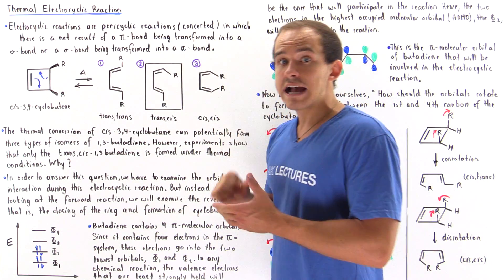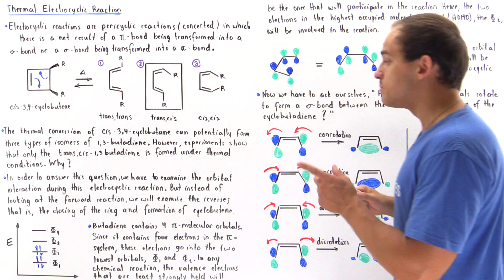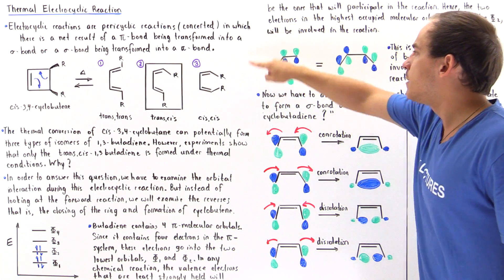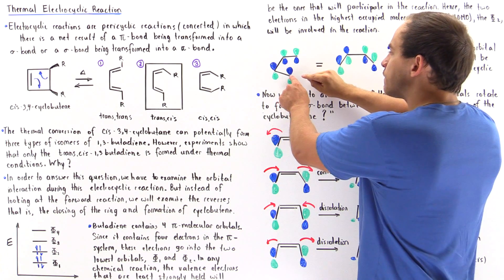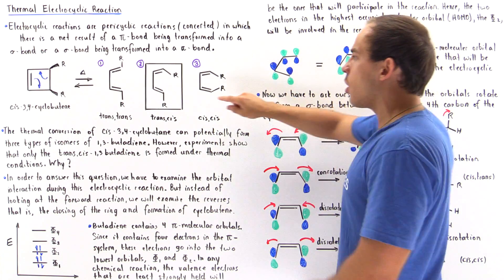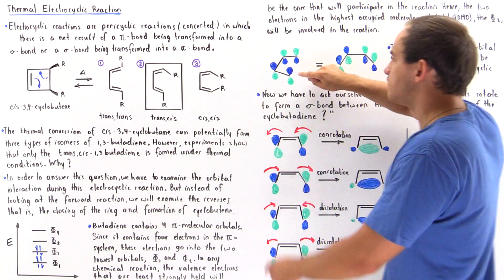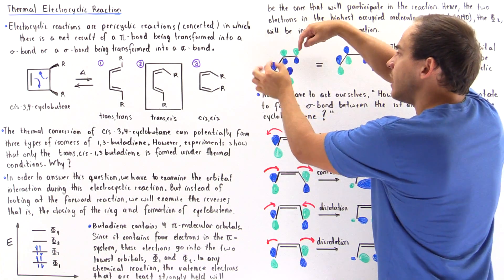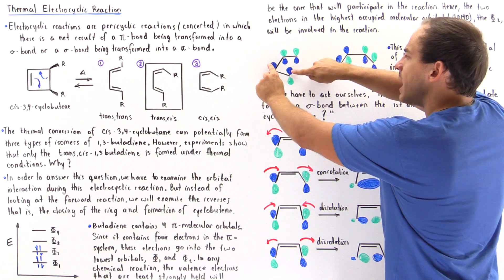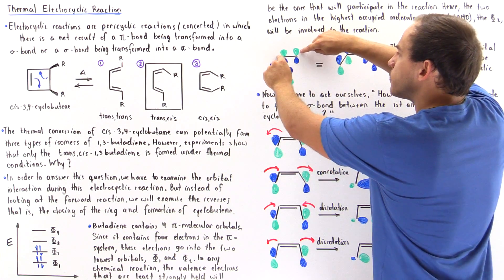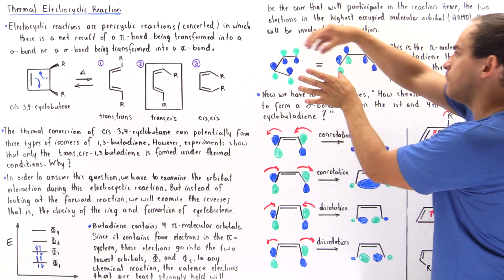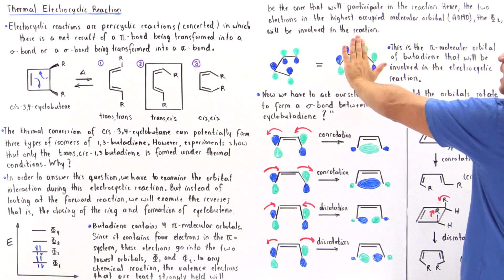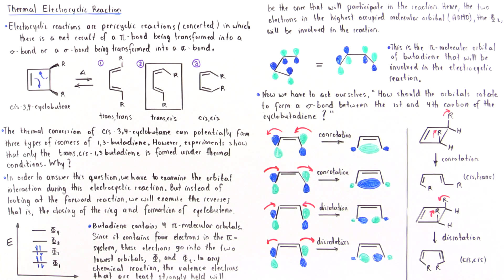The φ2 corresponds to the pi bonding molecular orbital involved in our reaction. Looking at this orbital: carbon one and carbon two have the green regions aligned on the bottom and blue regions on top. For carbon three and four, the greens are now on top and the blues are on the bottom. When we twist this, we get the φ2 molecular orbital of butadiene that will be involved in our reaction.